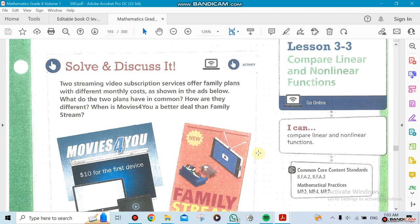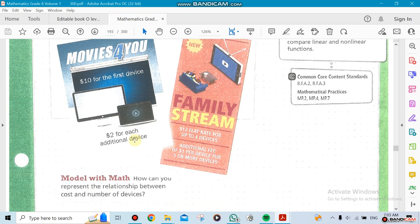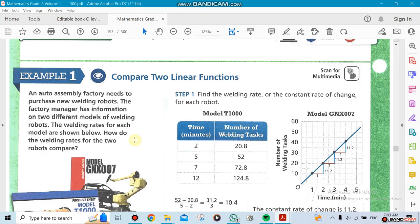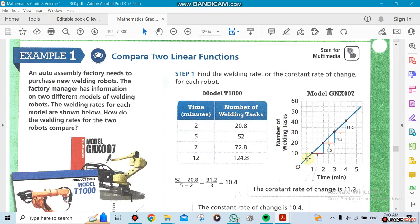Chapter 3 now is 3.3, which is comparing linear and nonlinear functions. What's the difference between them? From the graph you could see, for example, this is a linear function because it's going up straight, exactly the same. It's gone with the same slope, same distance going to the right then up.